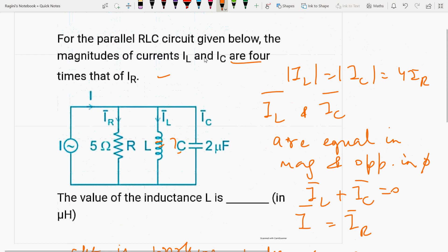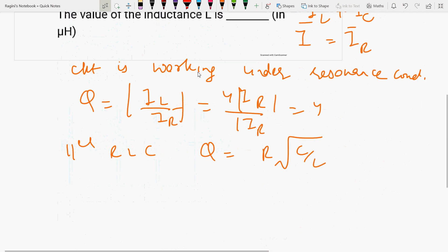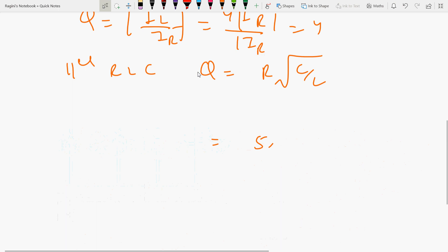From the given circuit, you have R value as 5 ohms, and C value as 2 microfarads. So here it becomes R value is 5 ohms, and C value is 2 microfarads upon L, and Q value is 4.